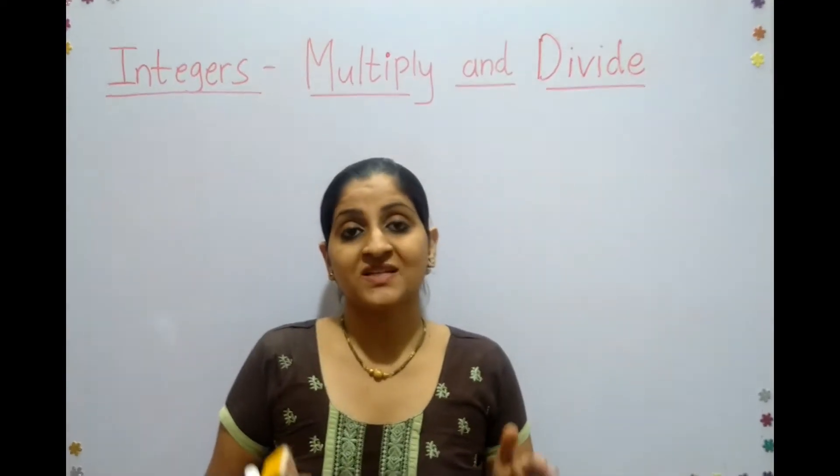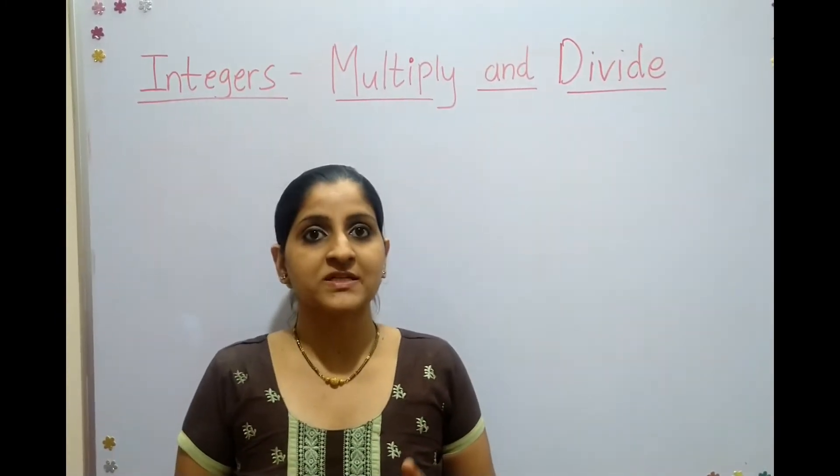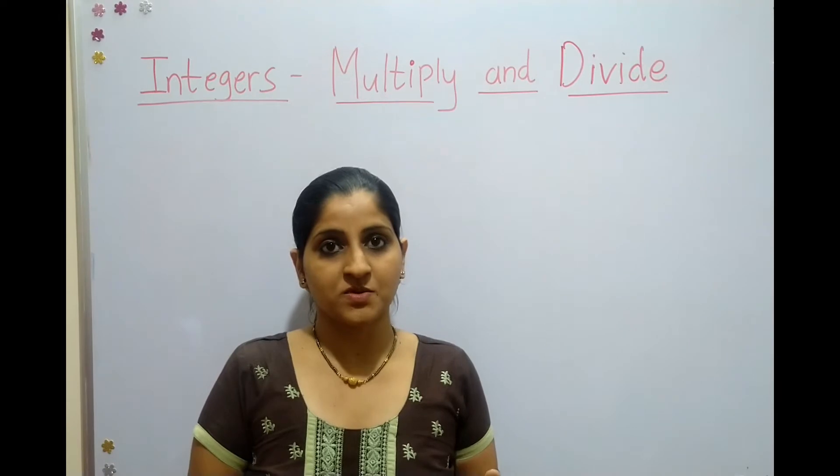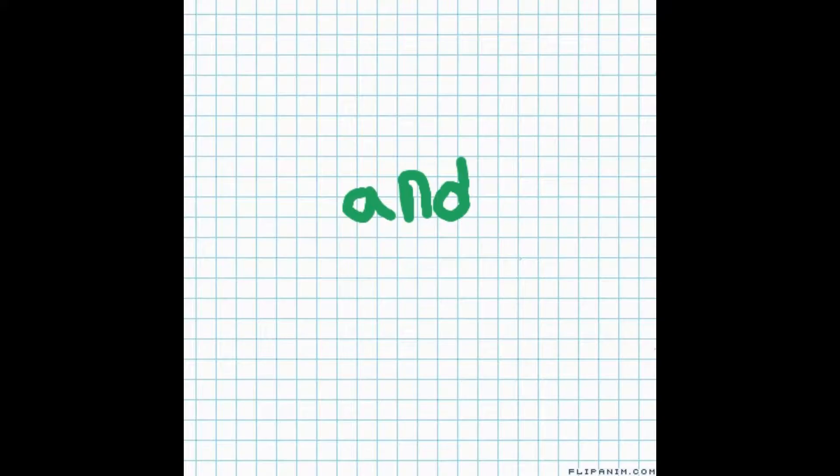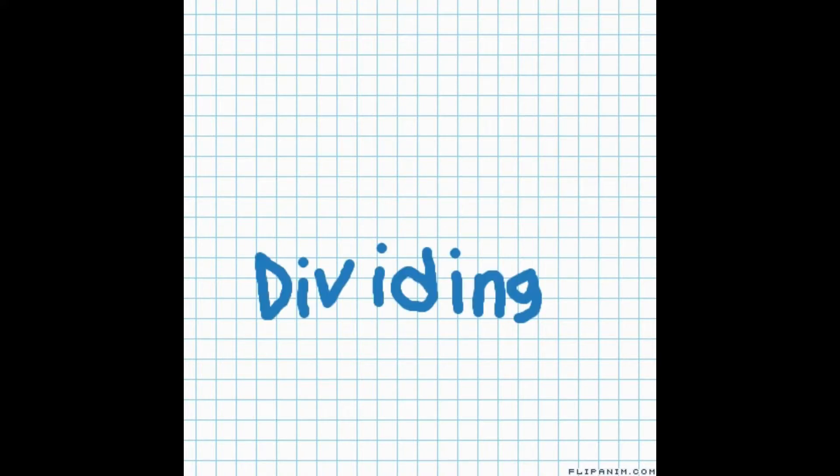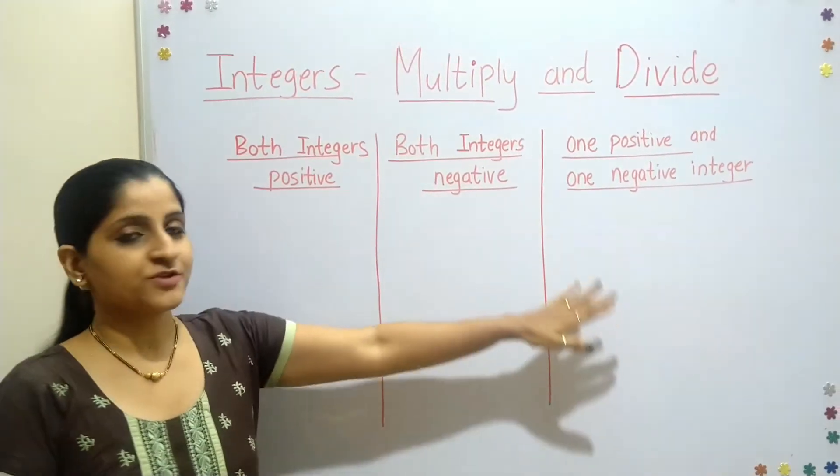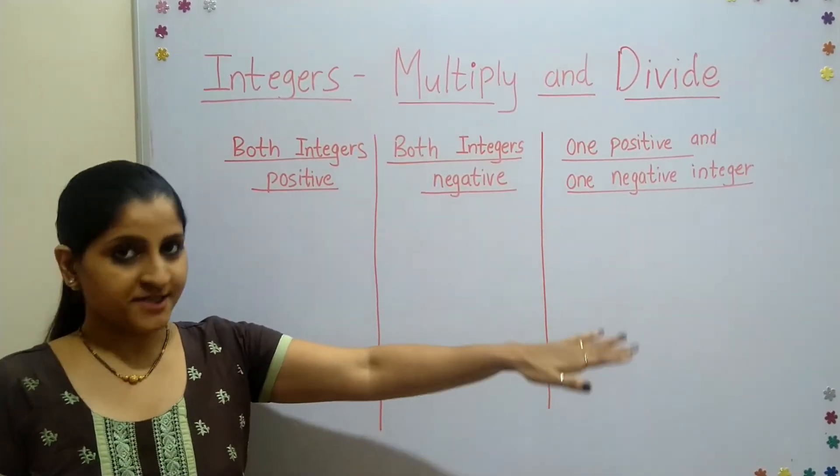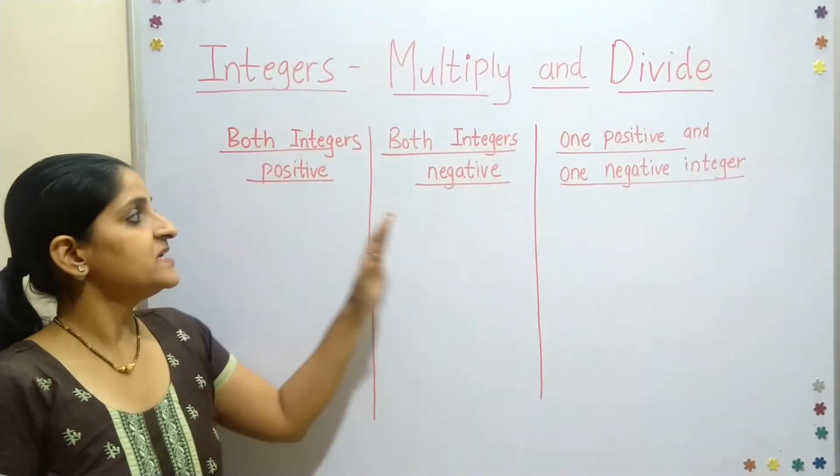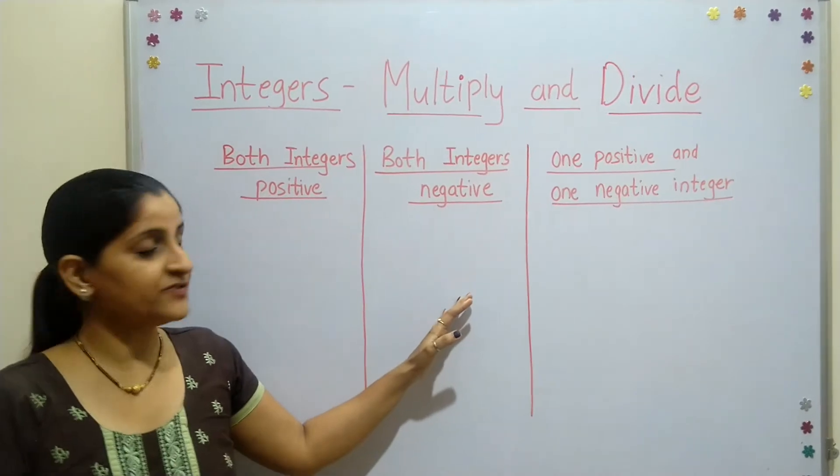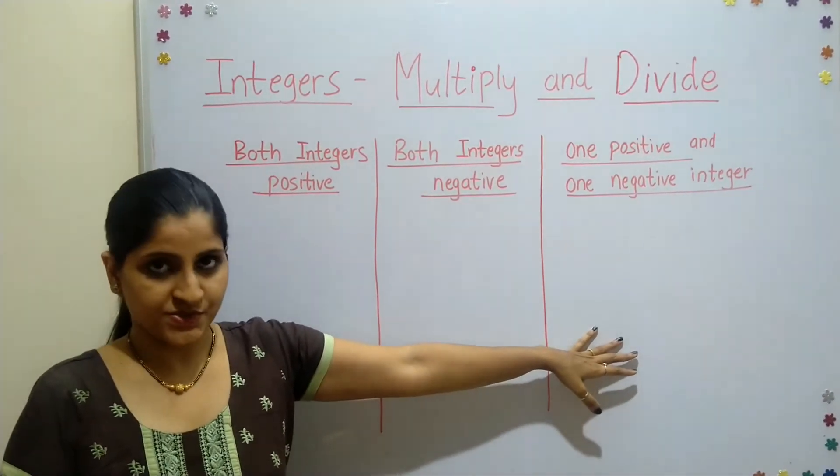Both multiplication and division of integers follow the same rule. Whether there's a multiplication or division sign between two numbers, the rules remain the same. I've written the three criteria we'll cover: first, when both integers are positive; second, when both integers are negative; and third, when one integer is positive and the other is negative.